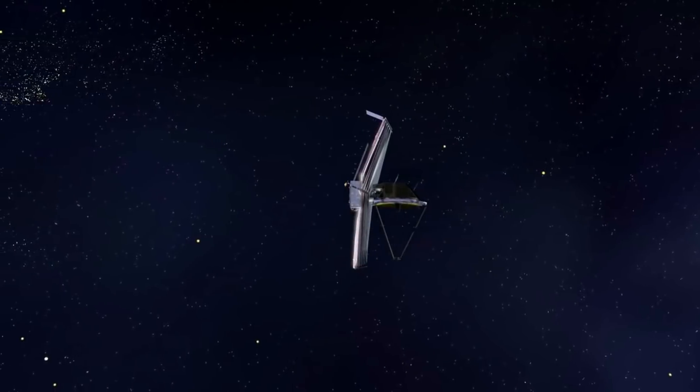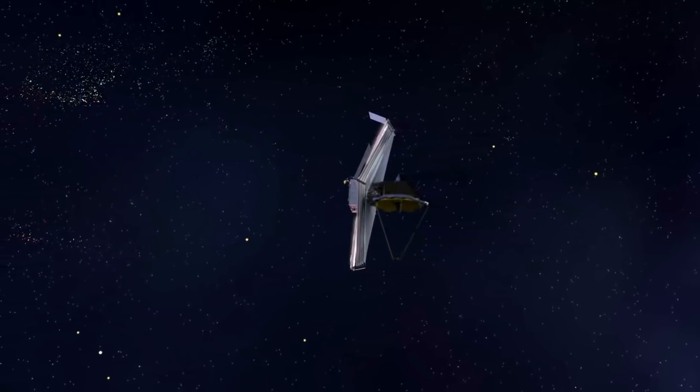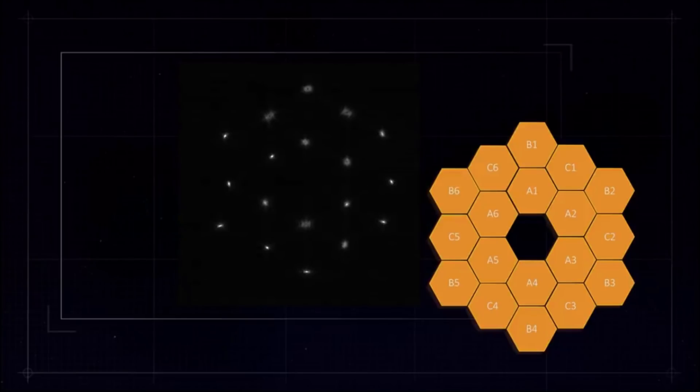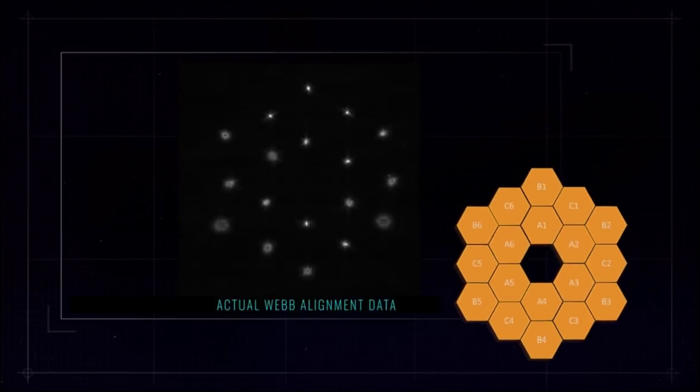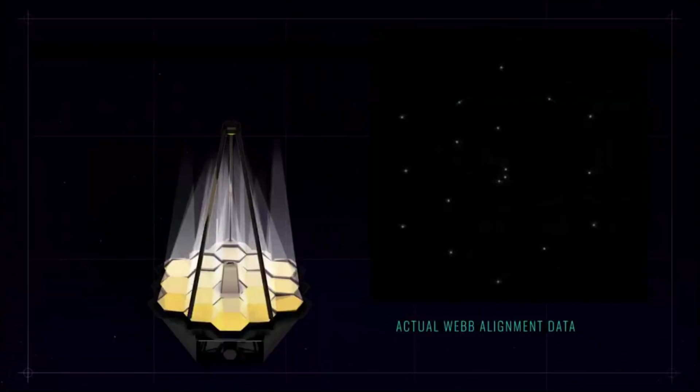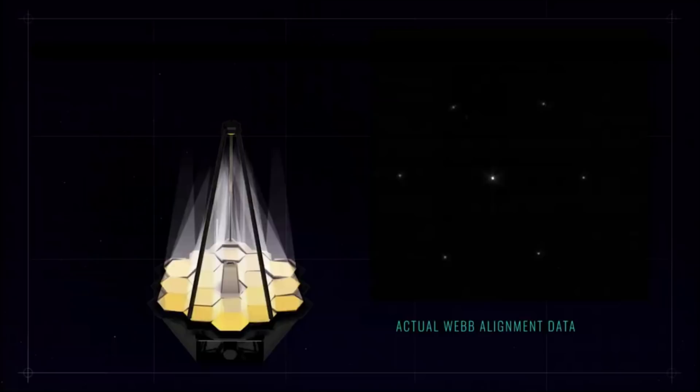About two weeks ago we saw Webb complete a major alignment milestone. Along with the completion of this important step was a unique image captured by the JWST that was released. The purpose of this image was to focus on the bright star at the center for alignment evaluation. However, Webb's optics and NIRCam are so sensitive that the galaxies and stars seen in the background show up. At this stage of Webb's mirror alignment, known as fine phasing, each of the primary mirror segments have been adjusted to produce one unified image of the same star, using only the NIRCam instrument. This image not only marked a major accomplishment, but also was extremely encouraging as it displayed and captured much more light than anticipated.